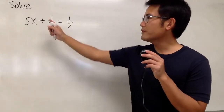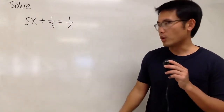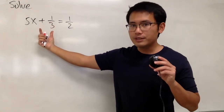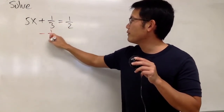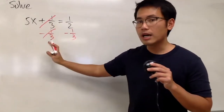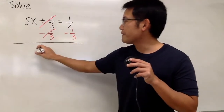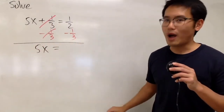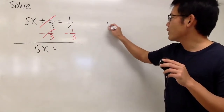We are going to solve the equation: 5x plus 1 over 3 is equal to 1 over 2. So here we go. As usual, we will try to get rid of this first — we are adding 1 over 3. Therefore, we have to subtract 1 over 3 on both sides of the equation, so this and that will be cancelled out. I will show you the work on the side. Have a look.